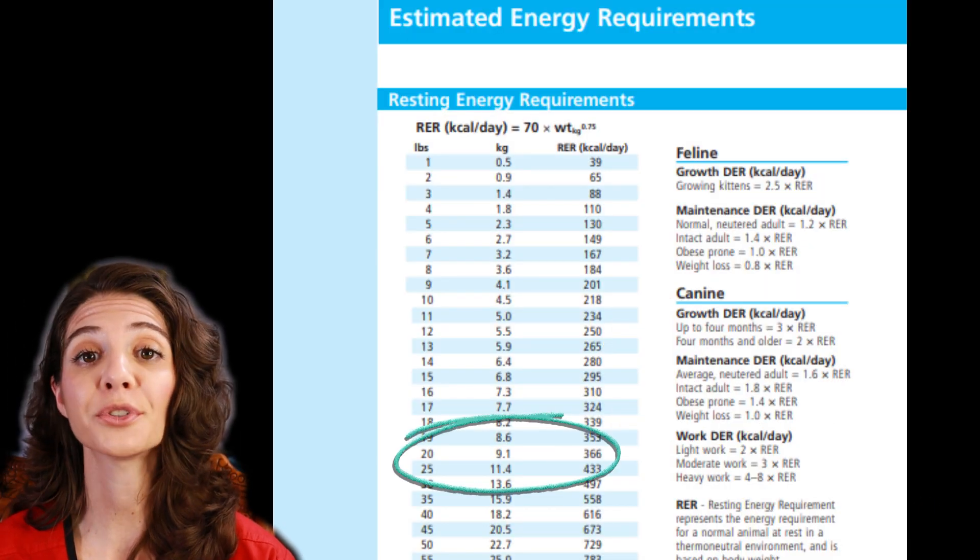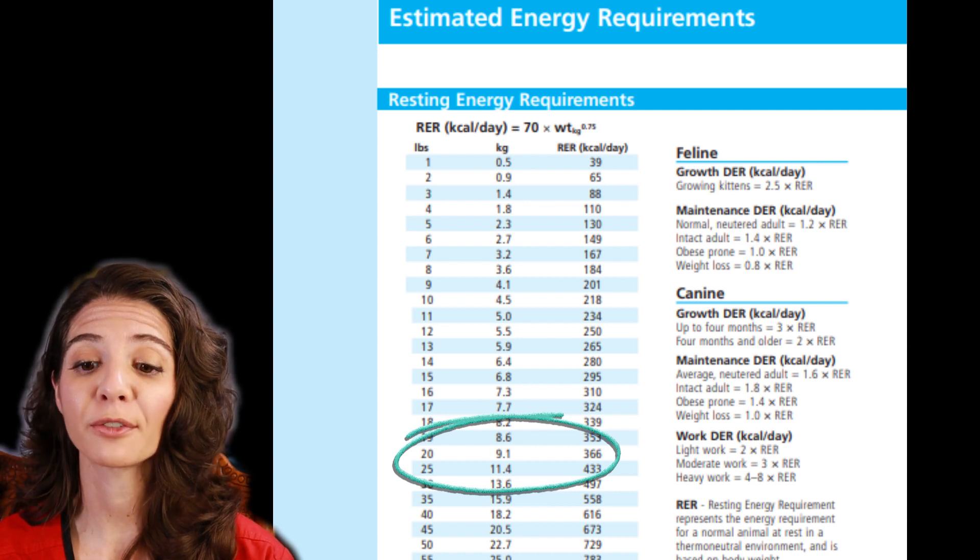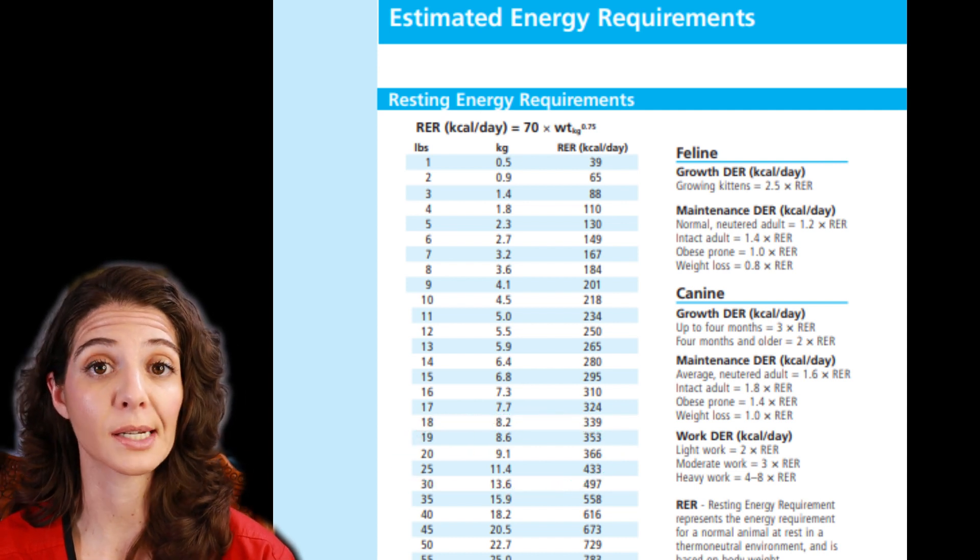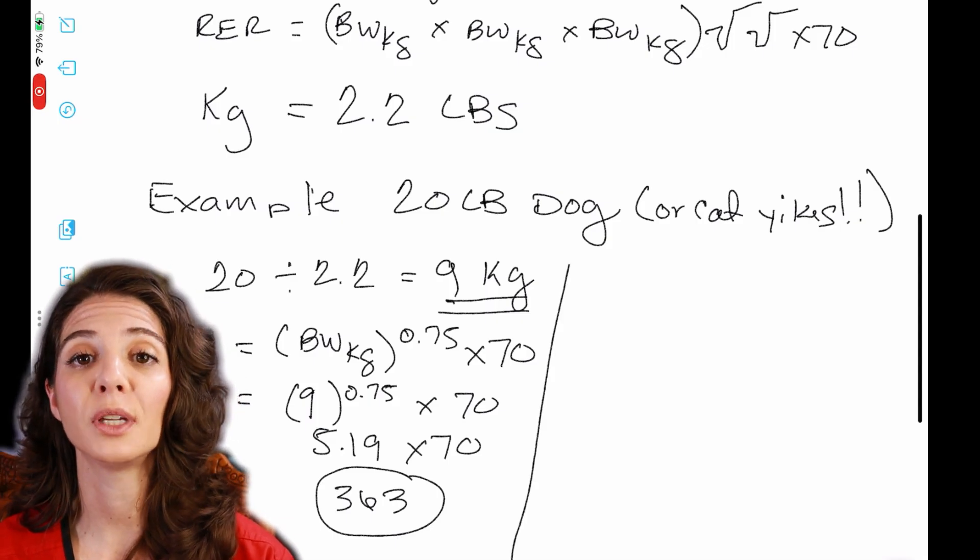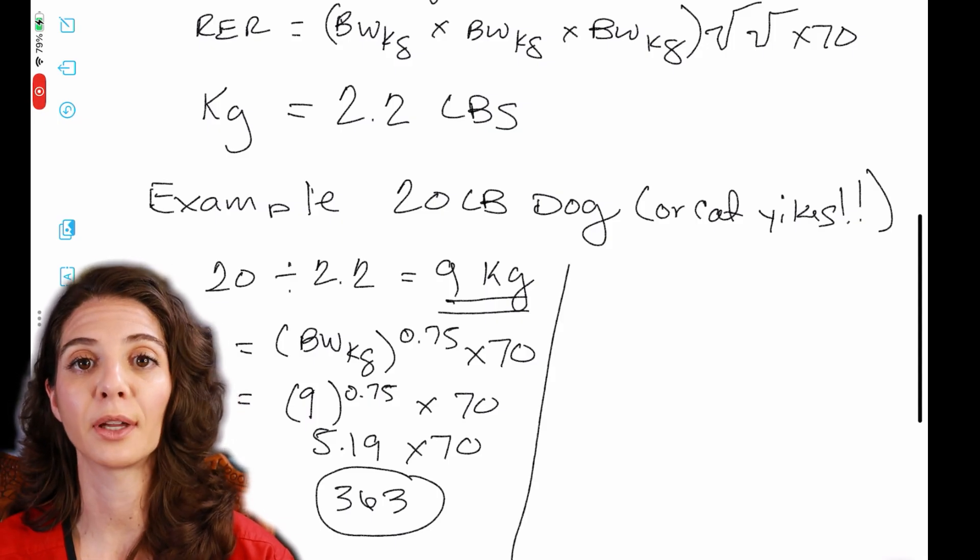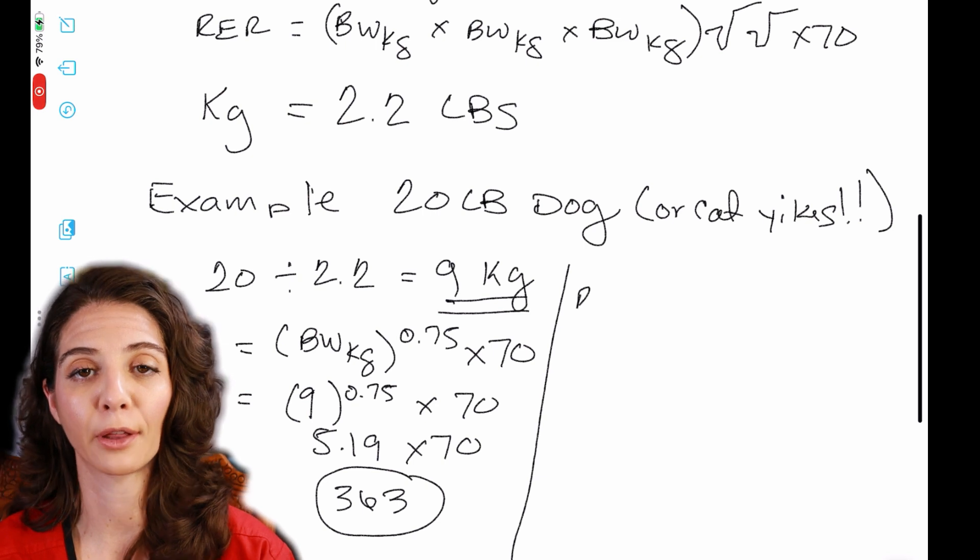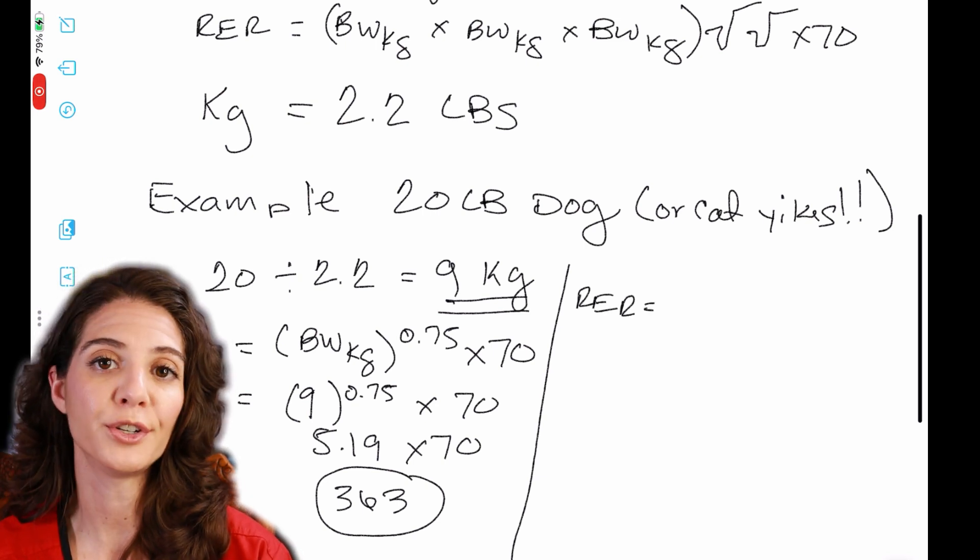And so if you reference the chart, you will see that the resting energy requirement for a 20 pound dog is 363 kcals. So on this side, we're going to do the I don't have a fancy calculator. I only have an old school analog calculator that I got 700 years ago.